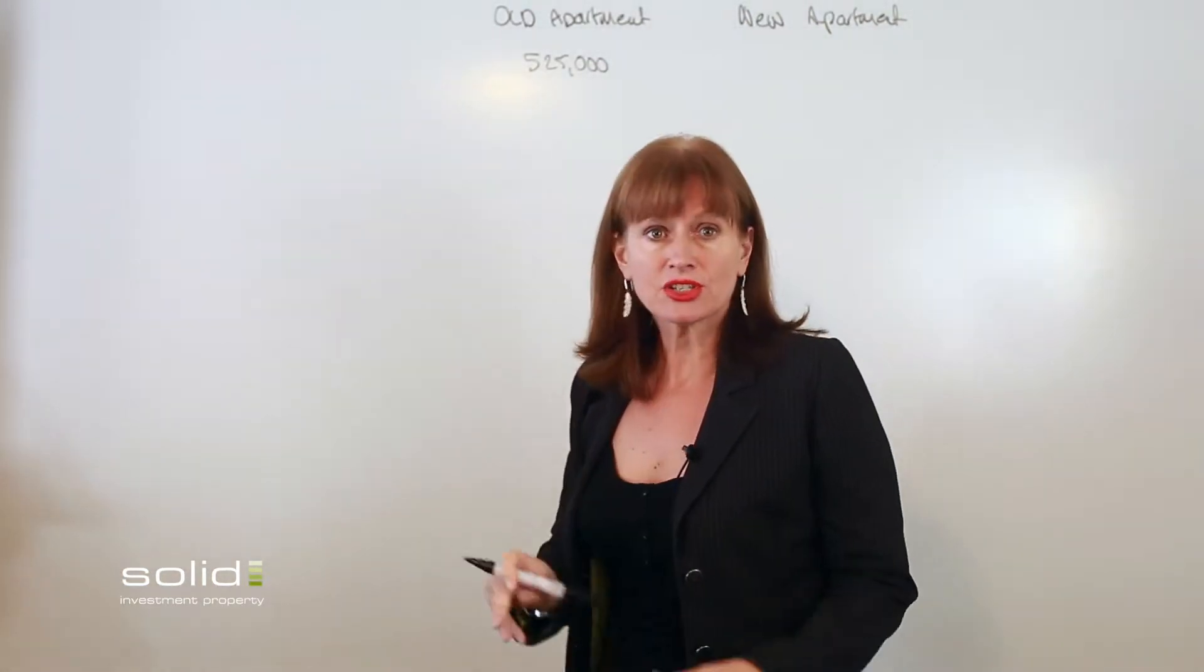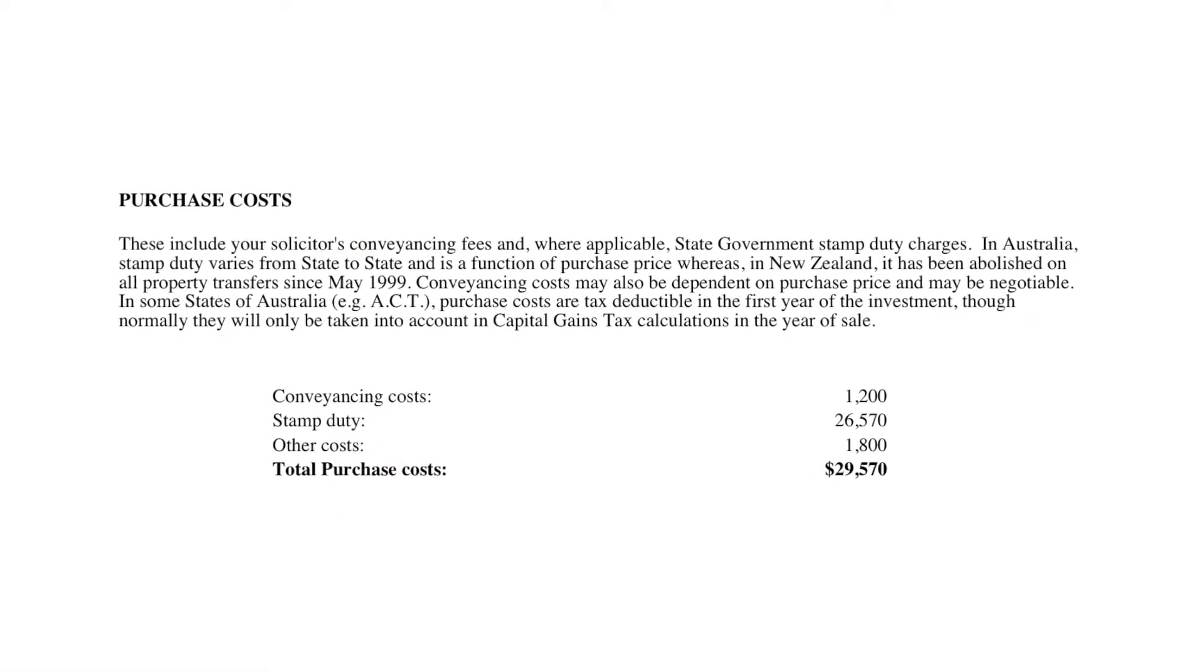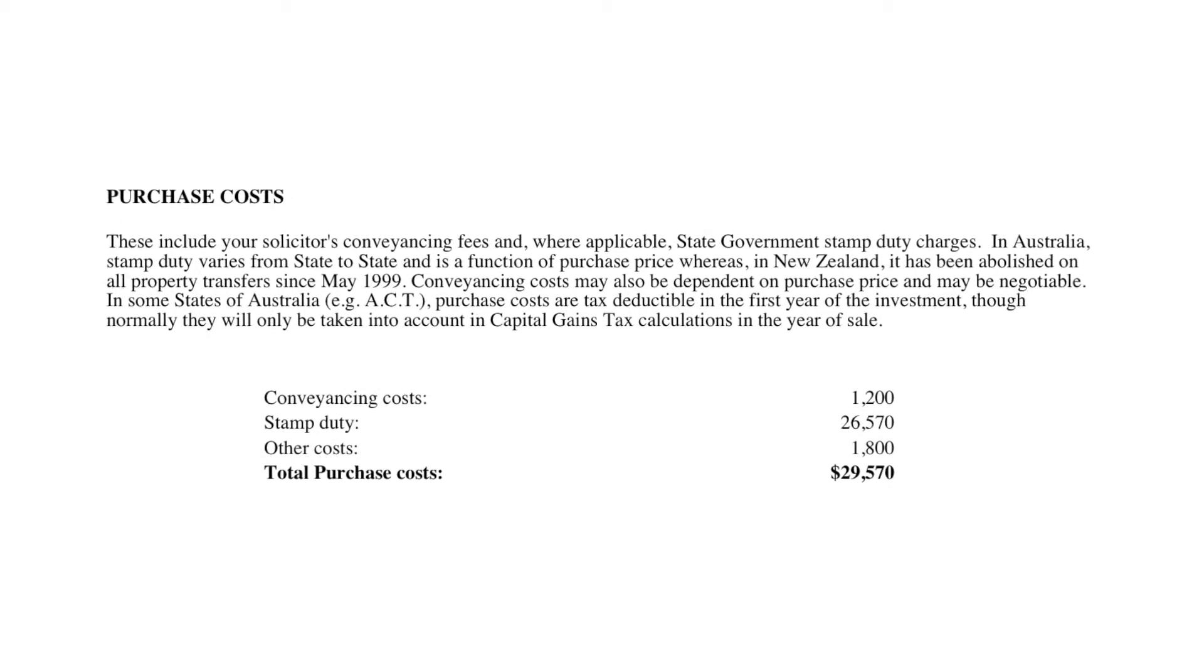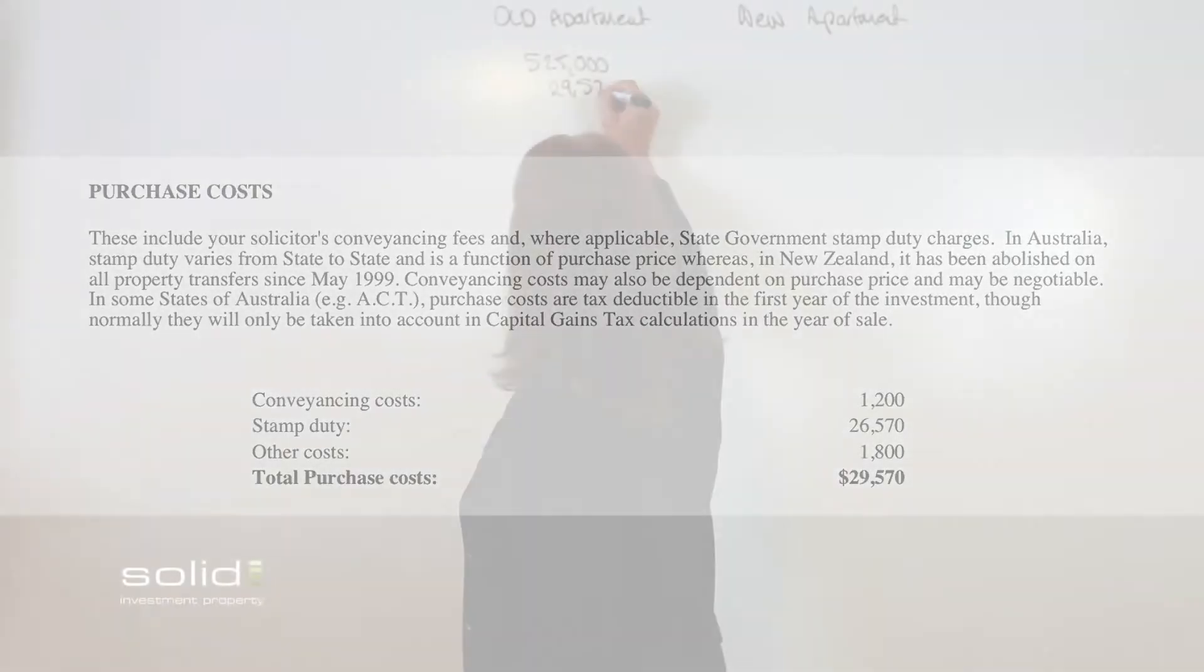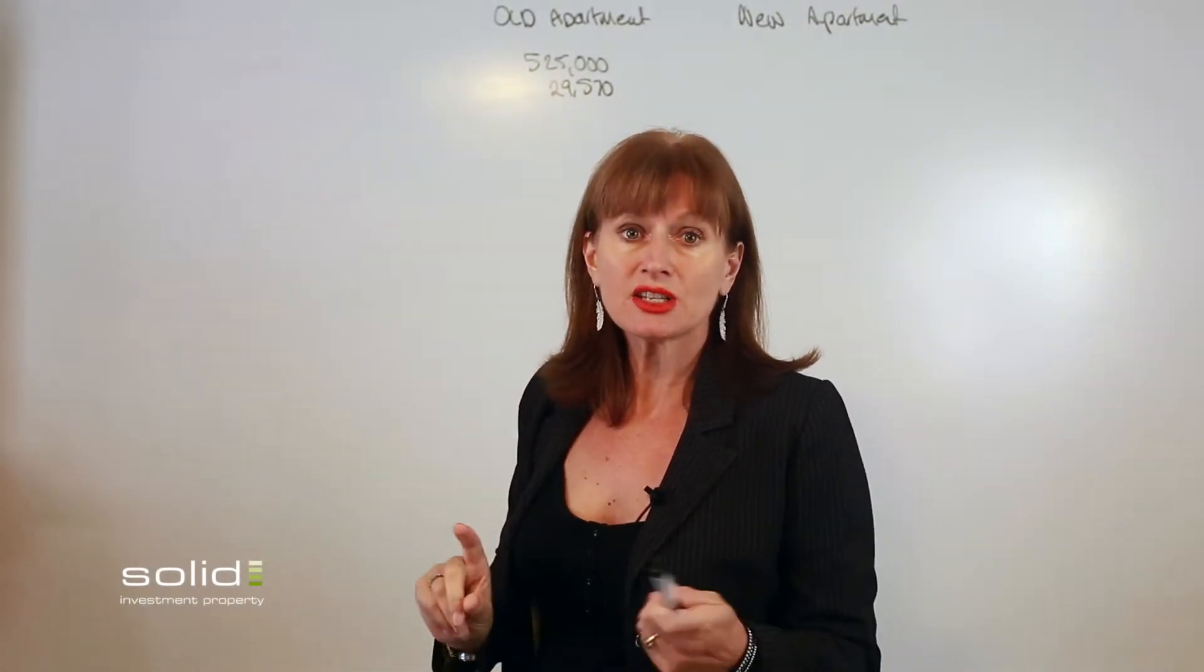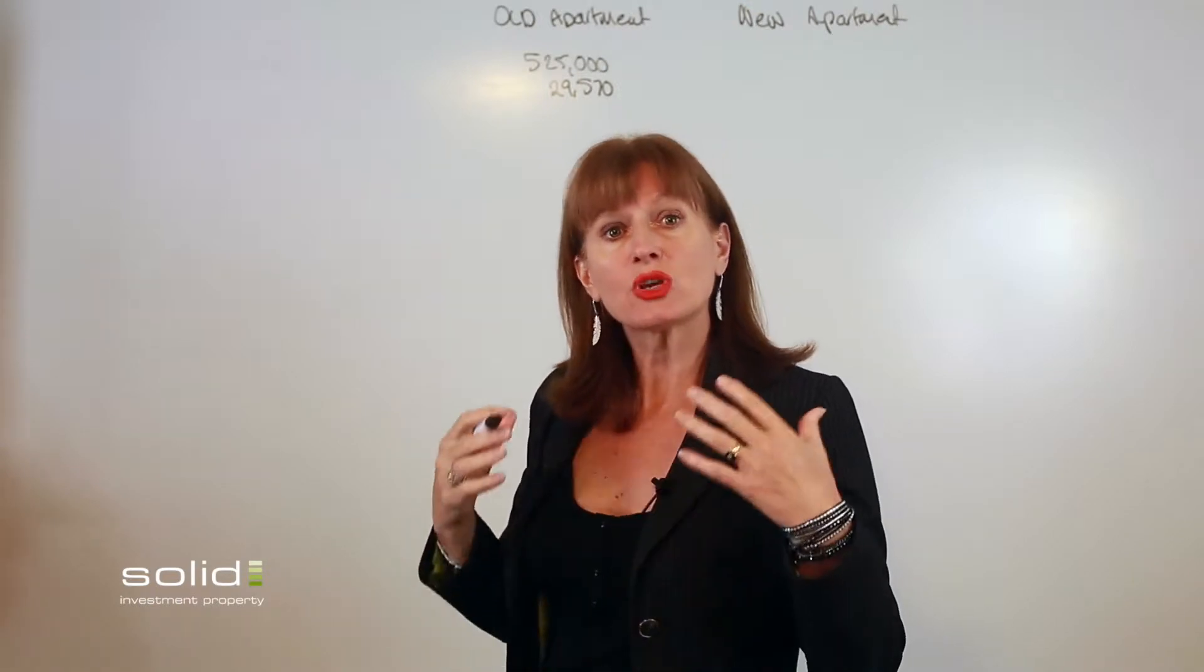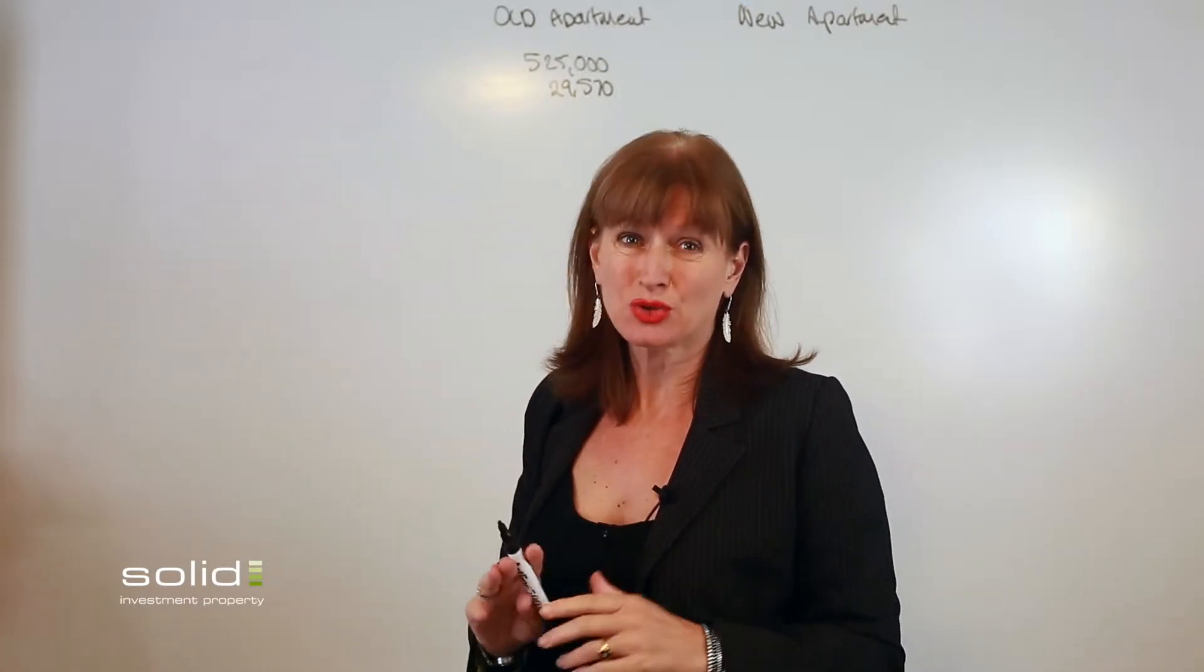The first thing to notice is the stamp duty. So when the purchase costs for this one were $29,570, they were the purchase costs because there's no stamp duty savings. So the next thing that we had to look at was because it's an old apartment, we're looking at a lower rental.